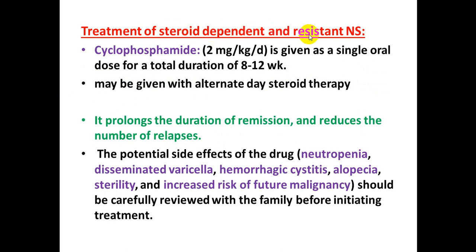For steroid-dependent and steroid-resistant nephrotic syndrome, cyclophosphamide — a cytotoxic drug — is used at a dose of 2 mg per kg per day as a single oral dose for a total duration of 8 to 12 weeks, usually with alternate-day steroid therapy. Cyclophosphamide prolongs remission and reduces relapses. However, potential side effects including hemorrhagic cystitis, alopecia, sterility, and increased risk of future malignancy should be carefully reviewed with the family before starting treatment.